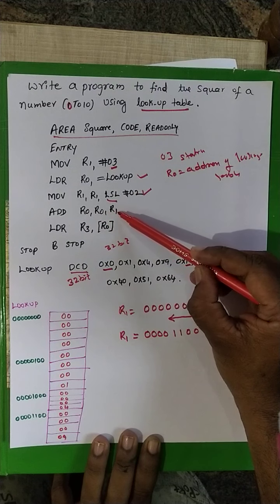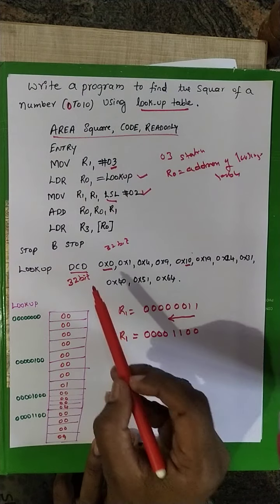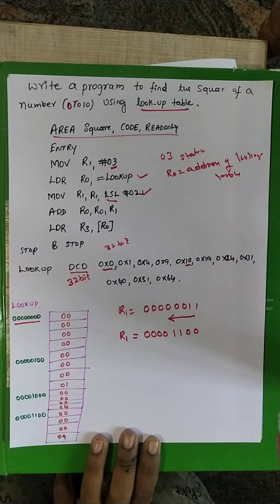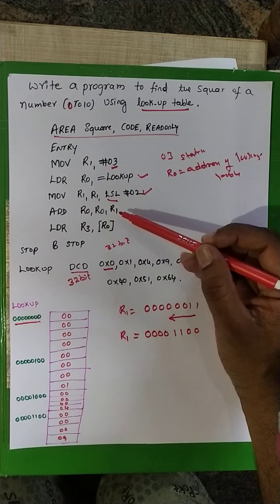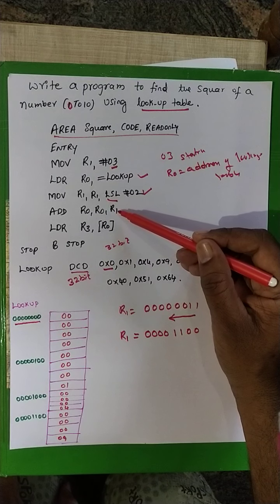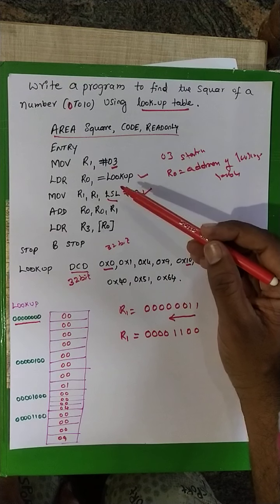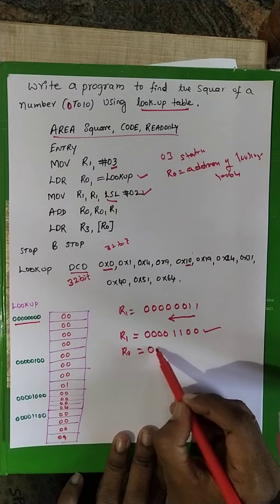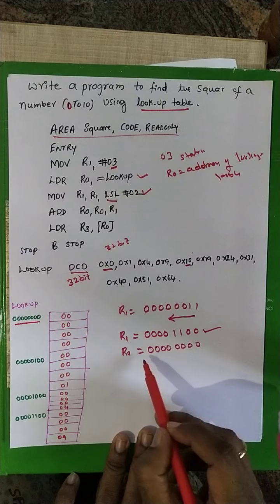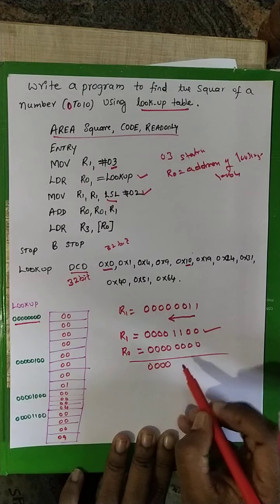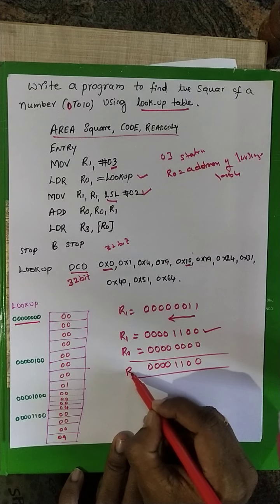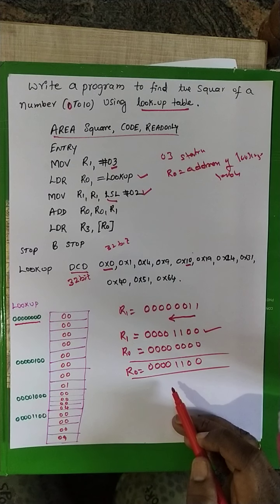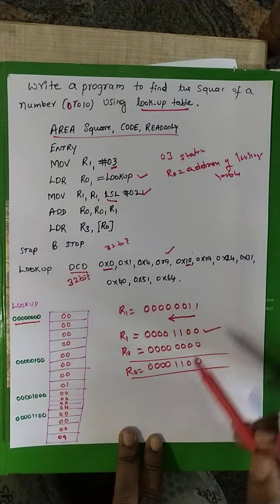The next instruction is: add R0, R1. R0 holds the starting address of the lookup table — let's say 0x00000000 for explanation purposes. R1 is the shifted value (offset for the number whose square we want). After addition, R0 becomes 0x0000000C (binary: 0000 0000 0000 1100), which is the address pointing to the memory location storing the square of 3, which is 9.